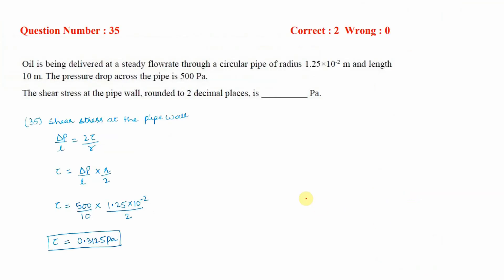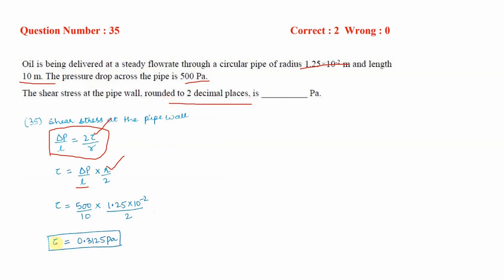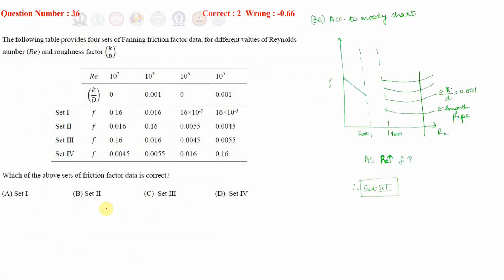To find shear stress at the pipe wall, we use the formula ΔP/L = τ/r (where τ is shear stress). With ΔP = 500 Pa, length L = 10 m, and radius r = 1.25 × 10⁻² m, substituting gives τ = 0.3125 Pa. Rounded to two decimal places, the answer is 0.31 Pa.